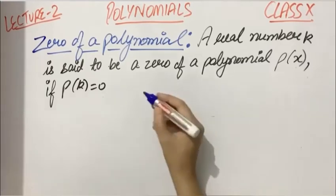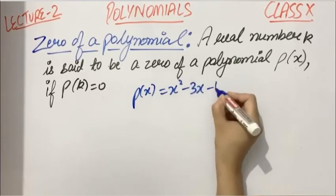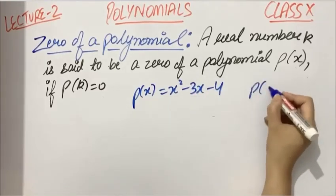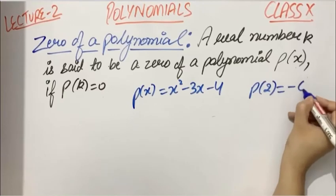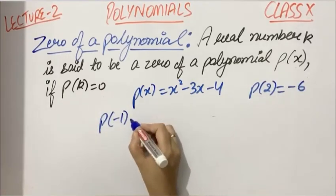Let me repeat the same polynomial here: x² - 3x - 4. We found its value at 2, and it was -6. Now if we find out the value of this same polynomial at -1...